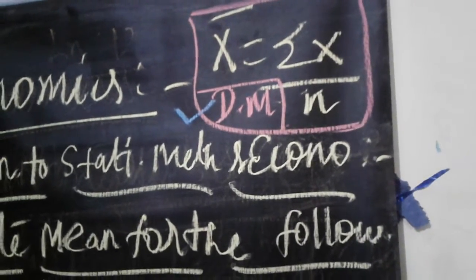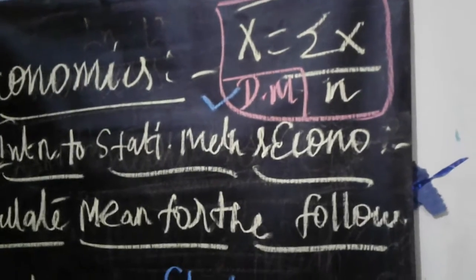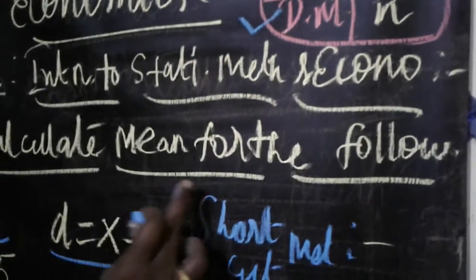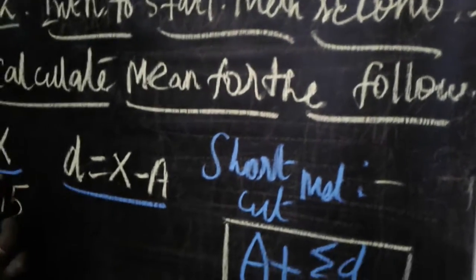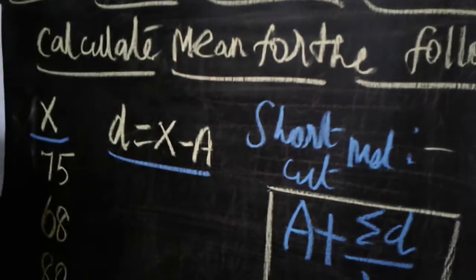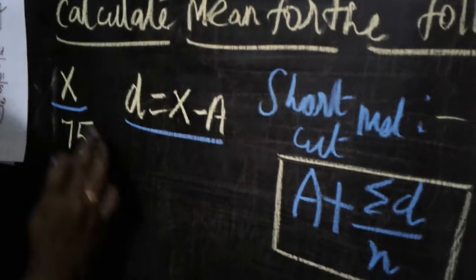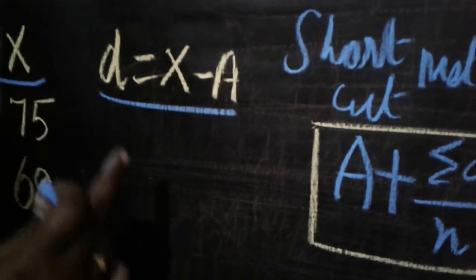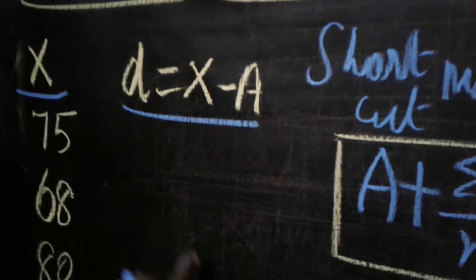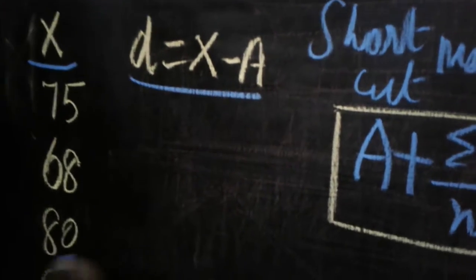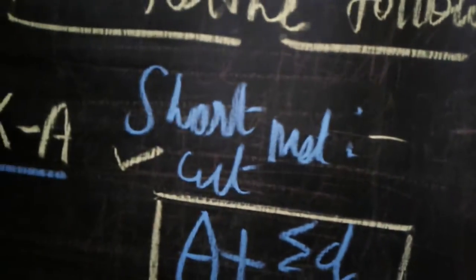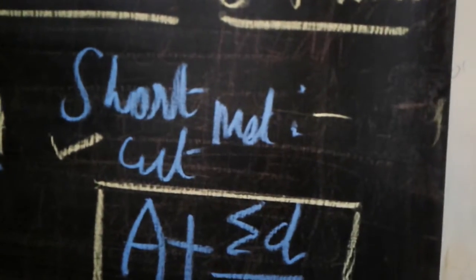What we are going to discuss today is: calculate mean for the following data using the shortcut method. The formula for the shortcut method is very easy — listen carefully.